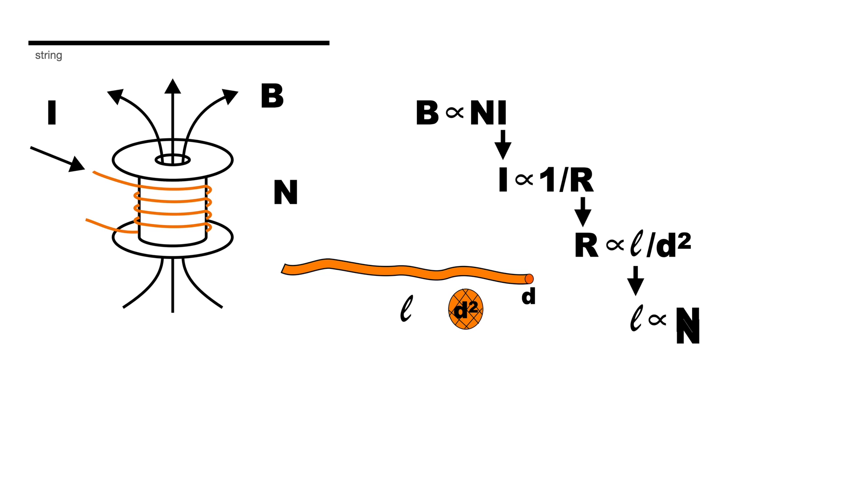And to analyze that I want to take a cross-section sort of out of the side of the bobbin like this. And in two dimensions that might look something like this where each orange circle represents one turn of wire as it punctures through the plane of my cross-section. And of course this wire still has diameter D.